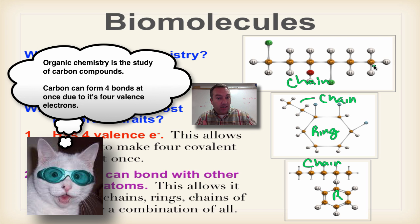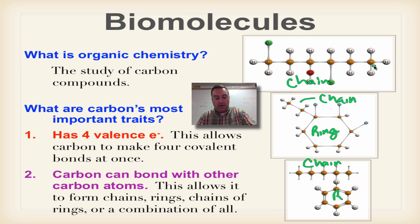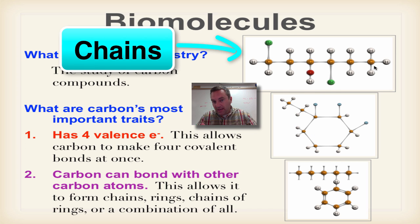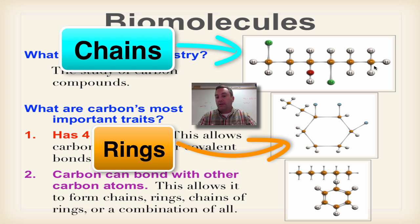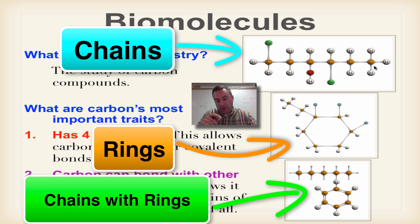Organic chemistry is the study of carbon. Why is carbon so neat? It can bond with four things at once, and it can also bond with each other to form these lovely shapes you see over here, which would be chains, rings, and chains with rings on them. So until the very next episode, we're going to catch you on the flip side.